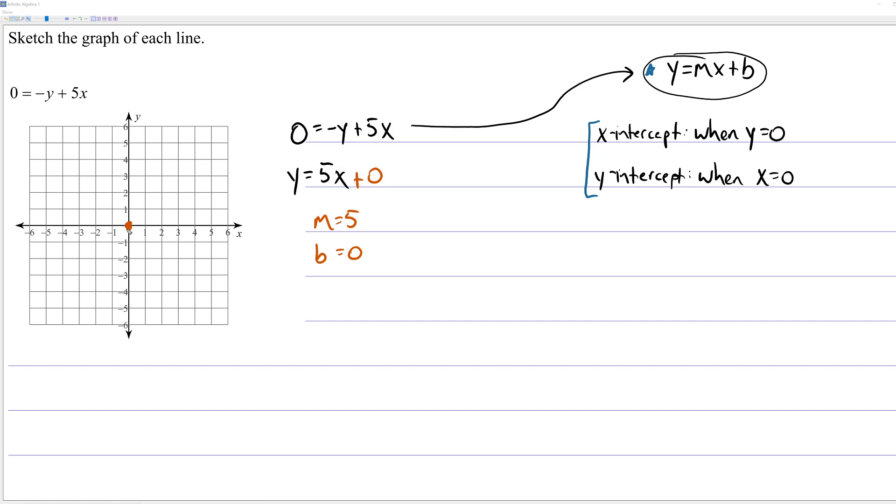So, I'm going to start at the y-intercept, which is 0. And the slope is 5, which I'll interpret as 5 over 1. So, for my rise over run, I'm going to go to the right one and up 1, 2, 3, 4, 5 to get a second point. So, to graph the line, connect the two dots, and we're done.